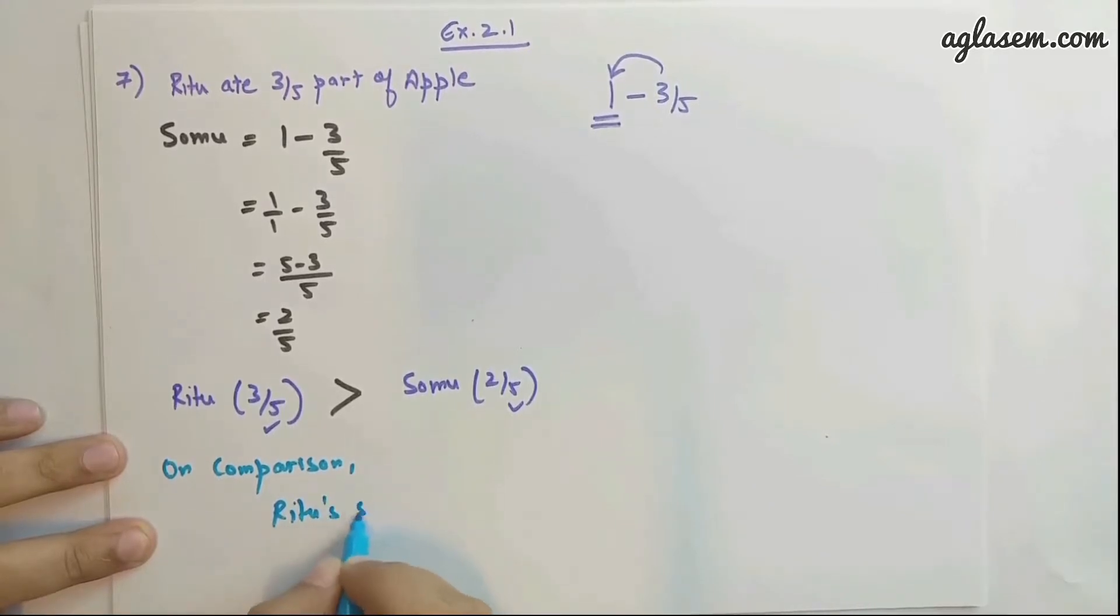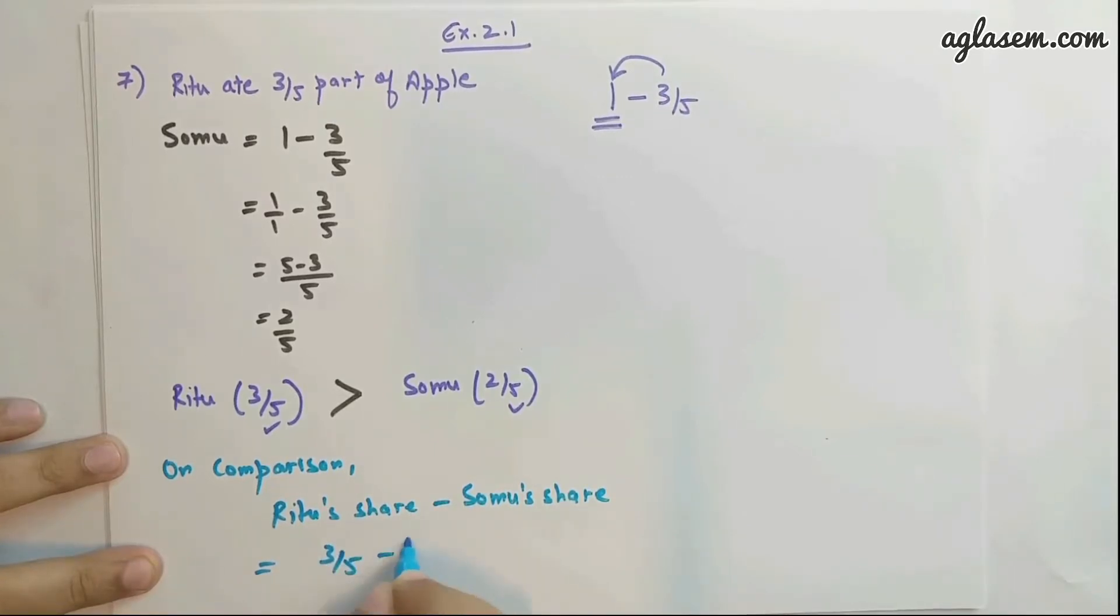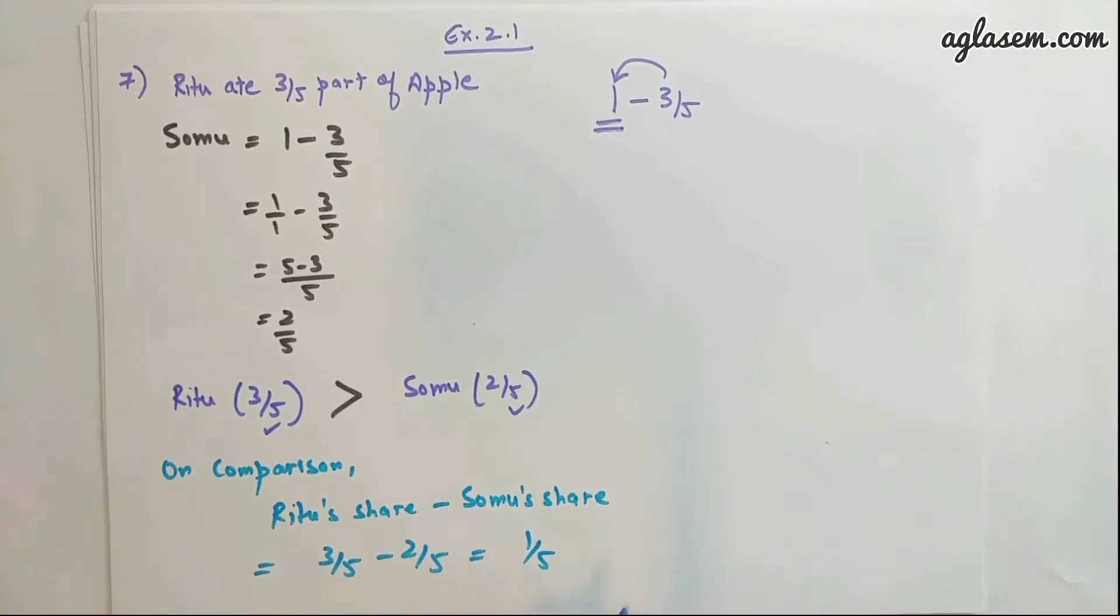Ritu's share minus Somu's share. Here you get 3/5 minus 2/5, so 1/5 is the excessive share that was enjoyed by Ritu. So the final answer will be 1/5 part of apple is the excessive part consumed by Ritu.